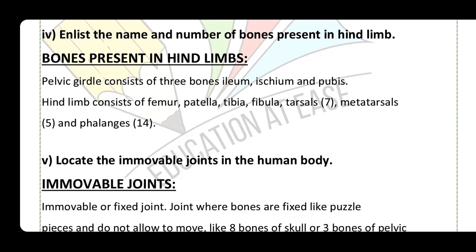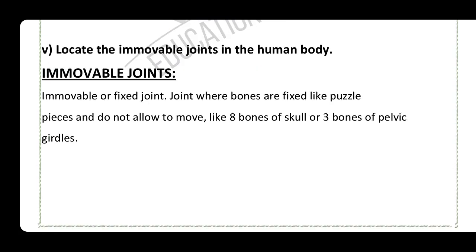Question: locate the immovable joints in the human body. Immovable joints are where bones are fixed like puzzle pieces and do not allow movement. Examples include the eight bones of the skull.